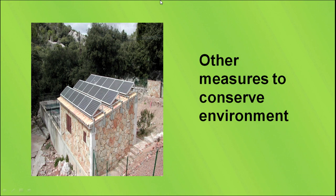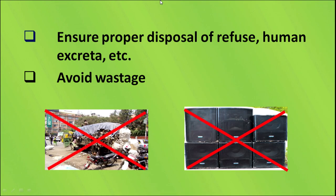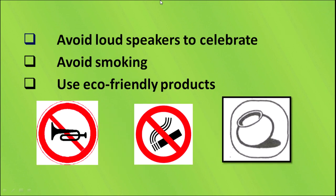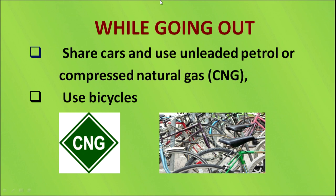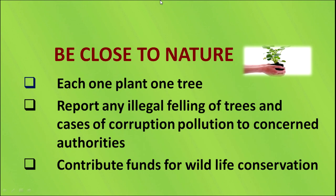Other measures to conserve the environment include: use of solar panels for generating electricity, solar cookers and solar heaters; maintaining sanitary conditions and adopting hygienic habits; ensuring proper disposal of refuse and human excreta; avoiding wastage and loudspeakers for celebrations; avoiding smoking; and using eco-friendly products at home. While going out, use shared cars, unleaded petrol, or compressed natural gas. Use bicycles or public transportation — bicycles are an eco-friendly mode of transport. Plant trees, report illegal felling of trees and pollution to authorities, and contribute funds for wildlife conservation.